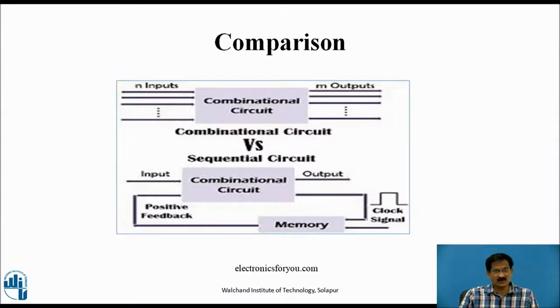This is the comparison between the combinational circuit and sequential circuit. A combinational circuit will have N number of inputs, in response to the N number of inputs it will give M number of outputs. Whereas a sequential circuit contains a combinational circuit having input and output, but moreover it contains a memory block with memory block having one input that is the feedback from the previous output and the clock.